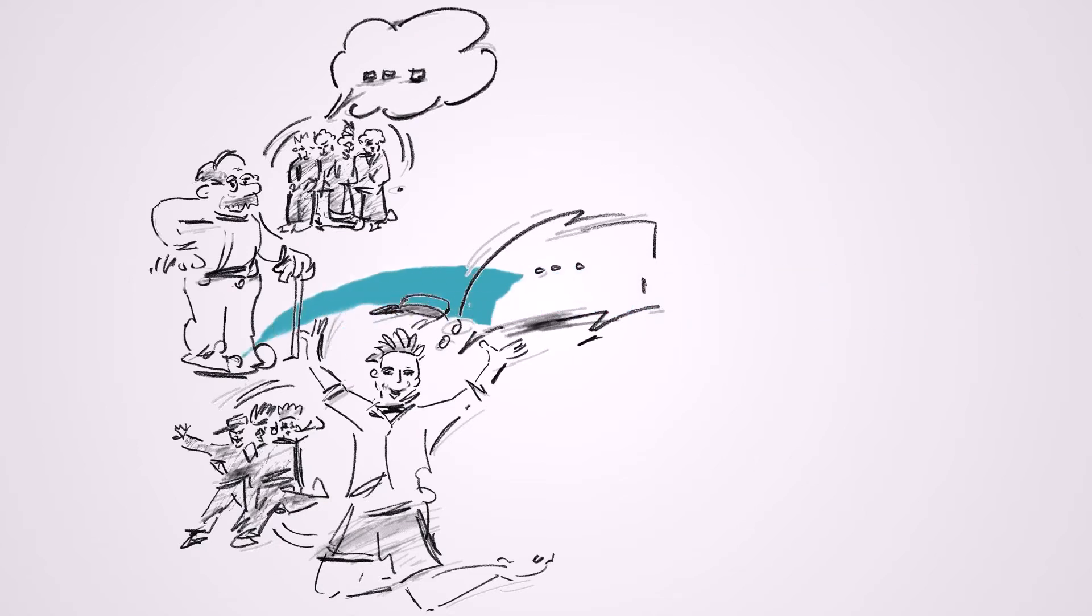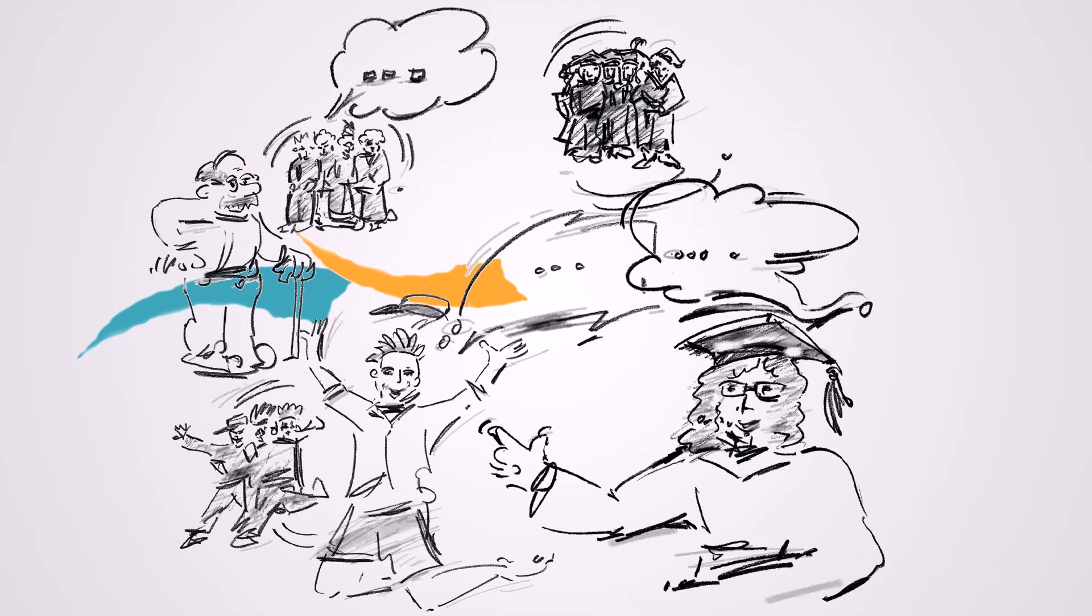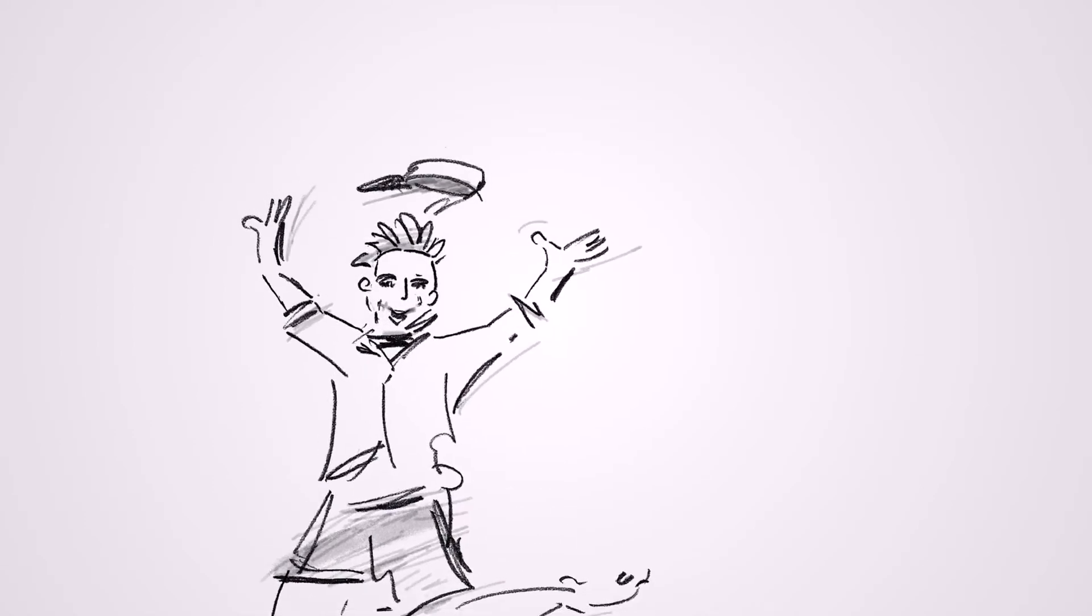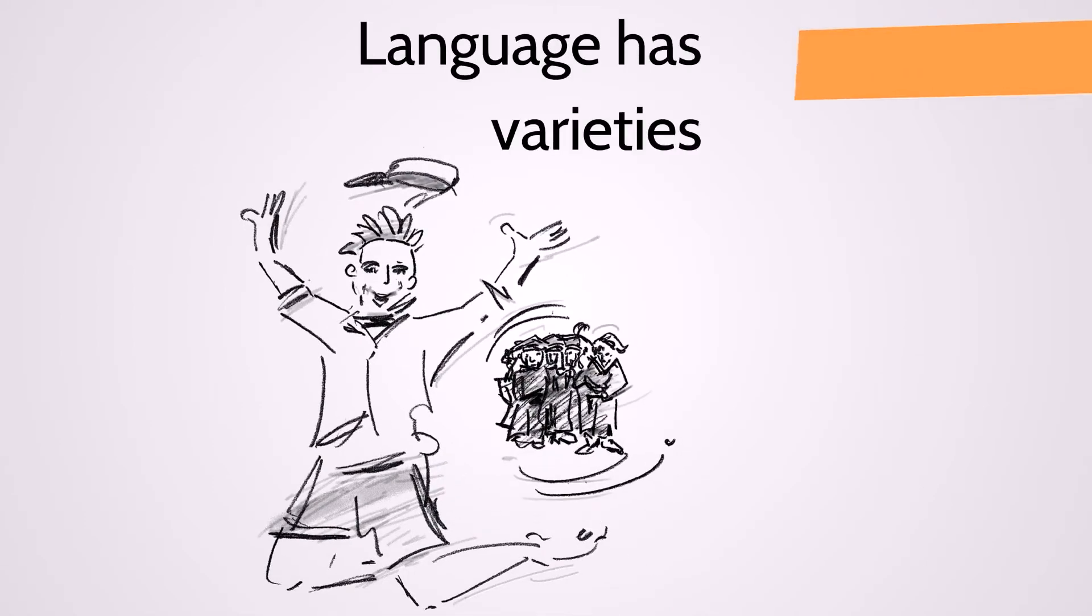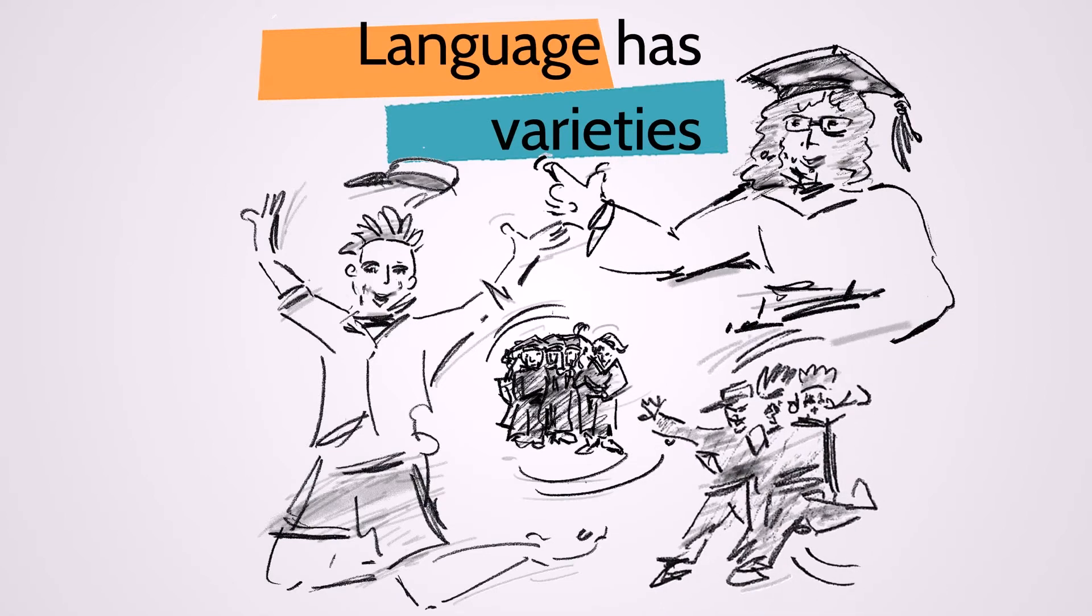For instance, young people speak differently from older people. Educated people differently from less educated. Experts differently from laypeople. Or those in the legal profession differently from those in the medical profession. This is why every language has varieties, such as slang, academic language, jargon, and colloquialisms.